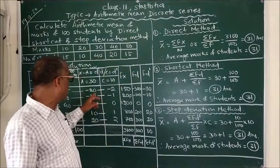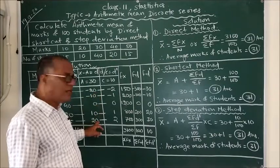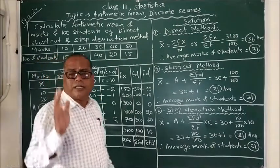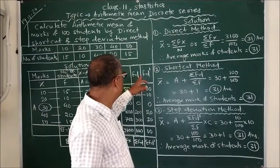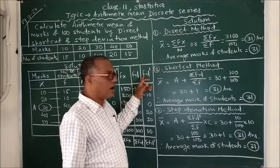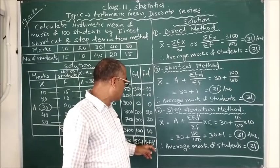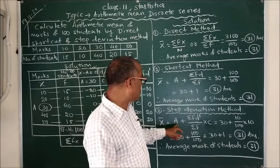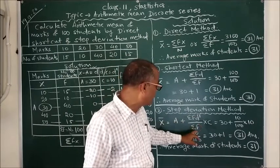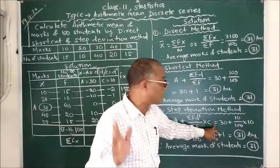What you find here is all the unit digits are 0, so all the numbers are divisible by 10. So we divided and found d dash. f into d dash is fd dash. Summation of fd dash is 10. The formula is a plus summation fd dash upon summation f into c, where c is the common factor.